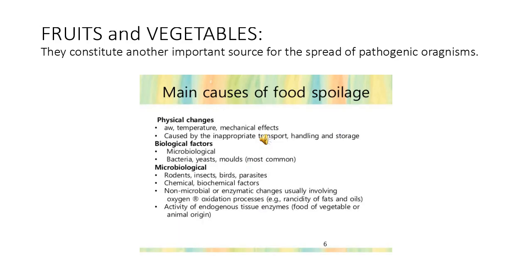Fruits and vegetables constitute another important source for the spread of pathogenic organisms. These infections are a public health concern where sewage is used for growing vegetables. The vegetables which are consumed raw in the form of salads are a risk. People should be educated to wash vegetables before eating them raw. Vegetables which are cooked are free from this danger.